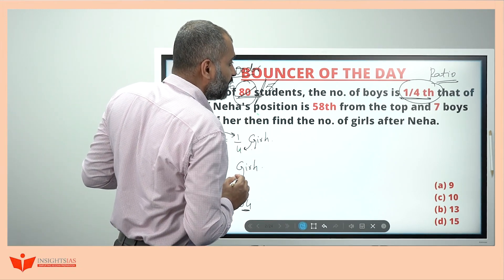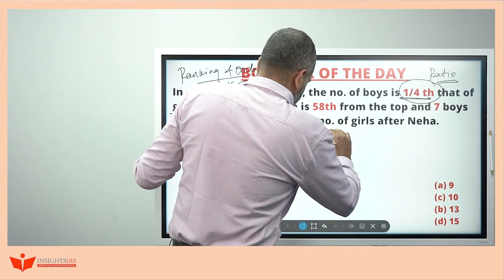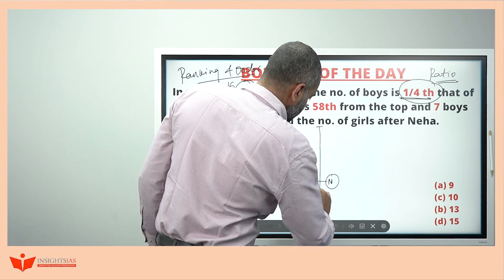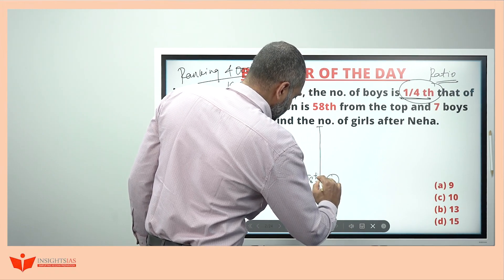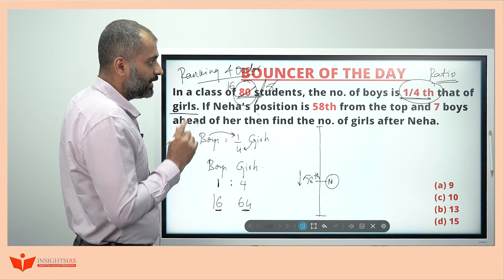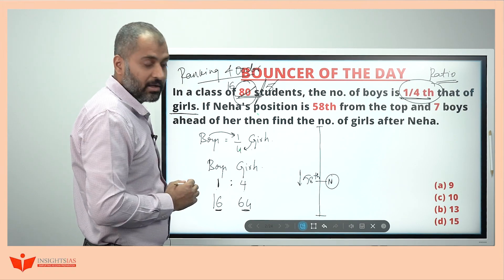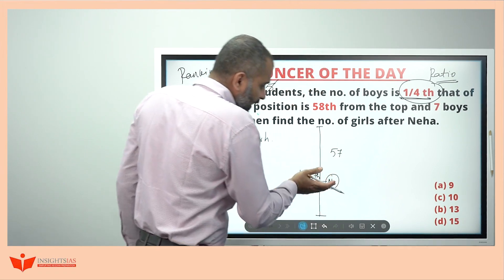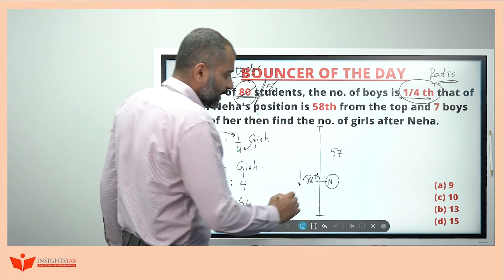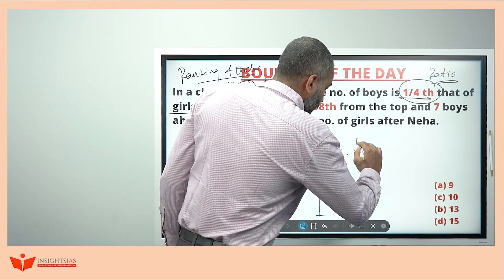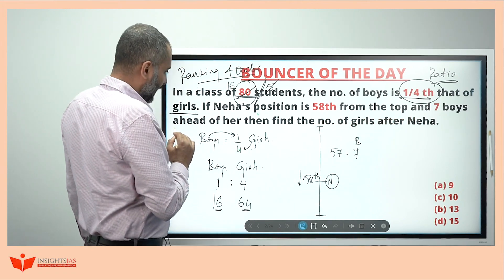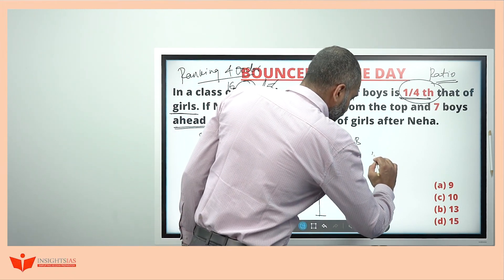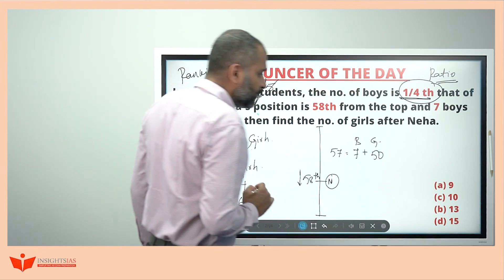If Neha's position is fifty-eight from the top, she is fifty-eight from this direction. There will be fifty-seven people before Neha towards the top. Among them, seven are boys — and seven boys ahead of Neha means fifty girls will be there before her, making fifty-seven total. So Neha will be the fifty-first girl.